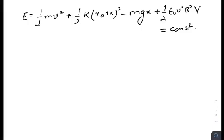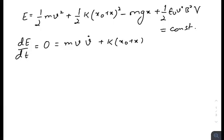So energy will be constant. So if you differentiate the energy with time, it will be zero. That is equal to mv(dv/dt) + k(x₀+x)ẋ - v̇ means dv/dt, differentiation with respect to t - ẋ, then -mgẋ + ε₀vv̇B²V.